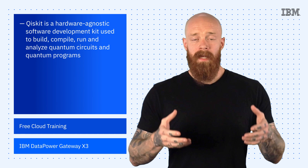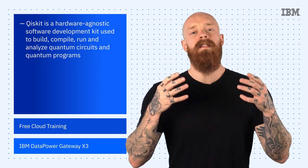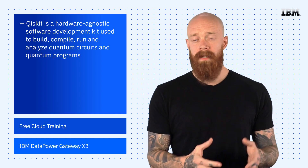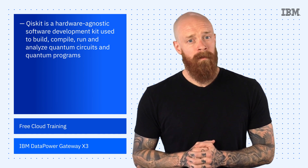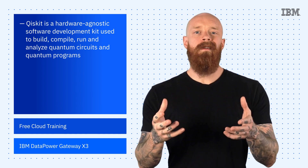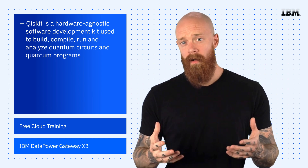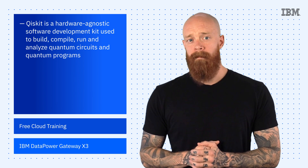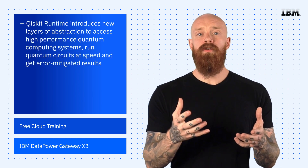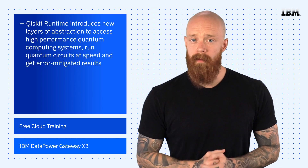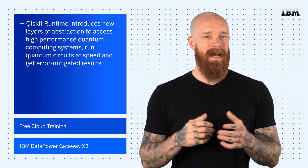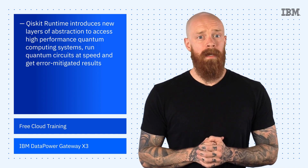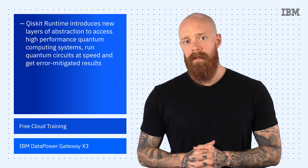But as quantum computing matures, the field is increasingly attracting new categories of users, such as algorithm developers and application researchers. These users want results without getting into the intricacies of hardware or dealing with quantum noise. And that's where Qiskit Runtime comes in. Released last year, it introduces new layers of abstraction that make it easy to access high-performance quantum computing systems, run quantum circuits at speed, and get error-mitigated results.